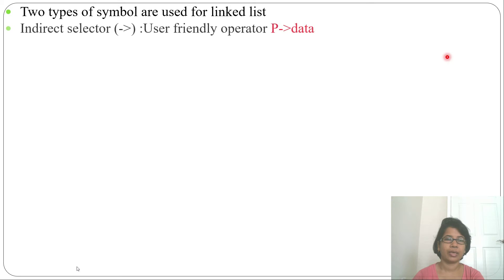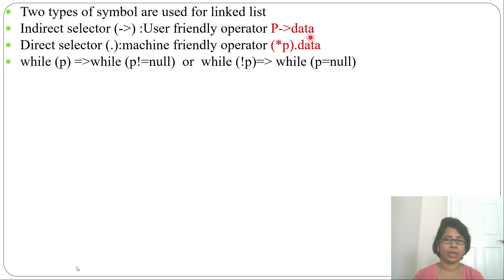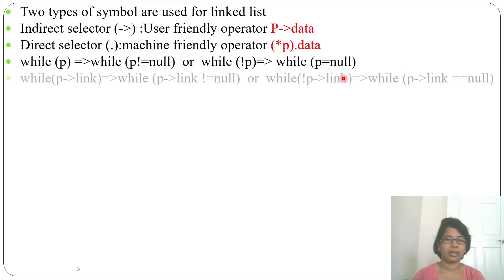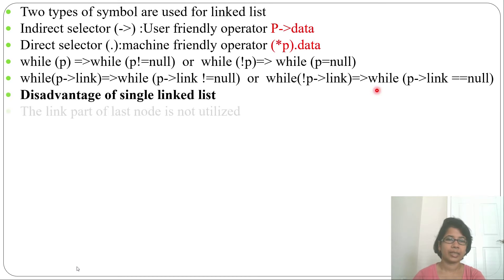Two types of selectors are used for linked lists. The indirect selector (→) is user-friendly and used in most questions — for example, p->data. The direct selector (.) is machine-friendly — you can write (*p).data. Mainly we use p->data. In many programs you will see: while(p) meaning p != null; while(!p) meaning p == null; p->link != null; and !p->link meaning p->link == null. These are common patterns in linked list questions.